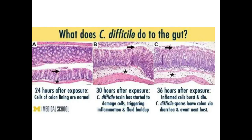Once you take a course of antibiotics, the antibiotics can kill off the good bacteria in your gut, allowing C. diff to grow in numbers. This can cause stomach pain, inflammation, and diarrhoea, which is very unpleasant. It can be treated with a different course of antibiotics, but the key point is that C. diff is triggered by antibiotic use in the first place.